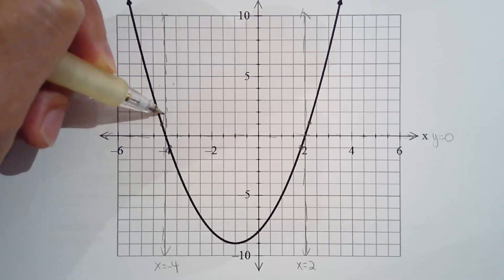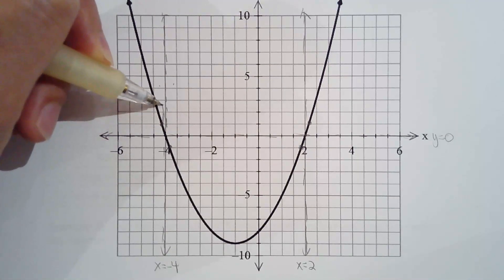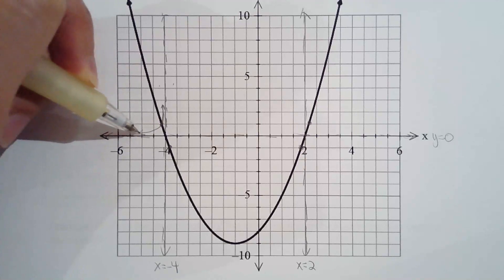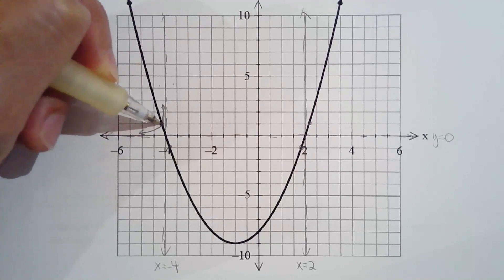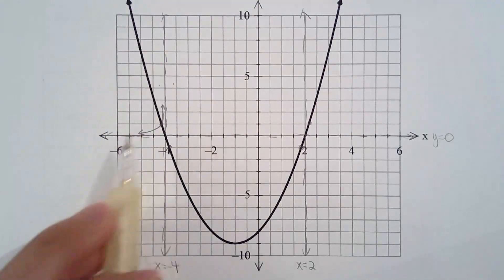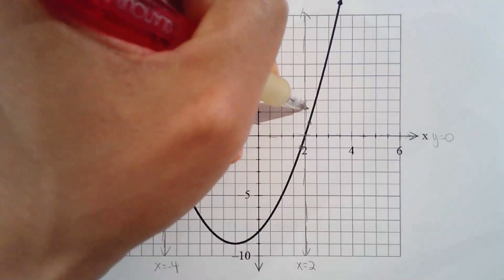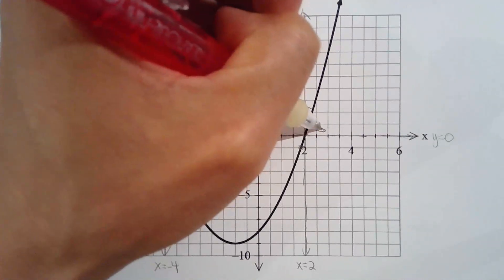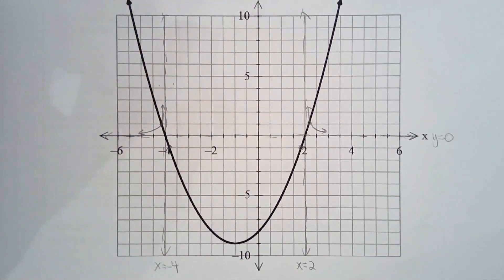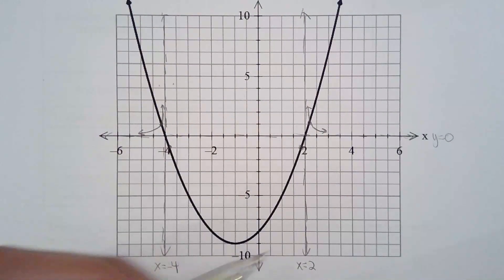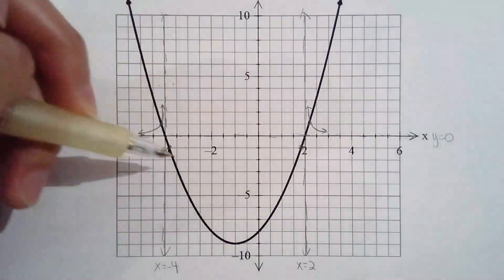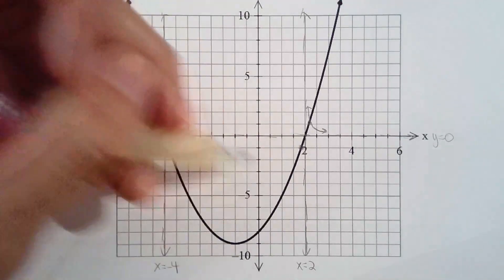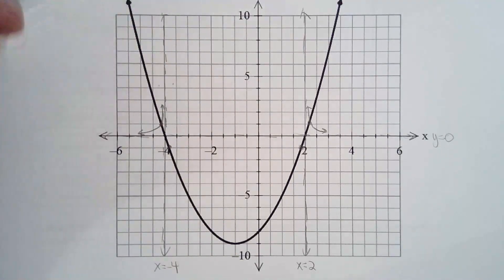So big becomes small, and small becomes big — that's how I get this branch. Same thing on the other side. Now let's focus on this middle branch here, because the features of the parabola will affect the features for the reciprocal of the quadratic function.